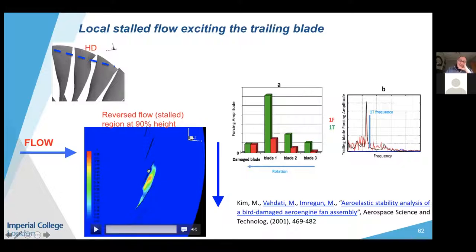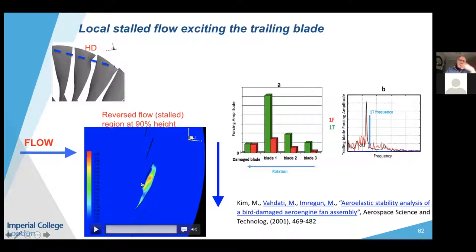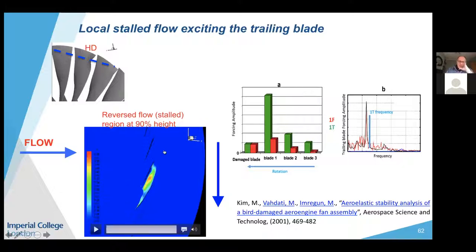This case was actually tested to understand why the blade struck by the bird did not come off, but the blade trailing it did. Even though this is a very difficult problem for CFD to solve, it qualitatively shows why in such scenarios it is not the damaged blade but the trailing blade that fails.